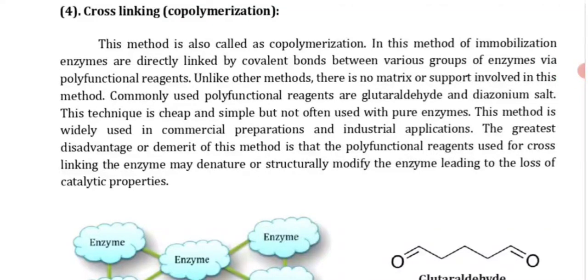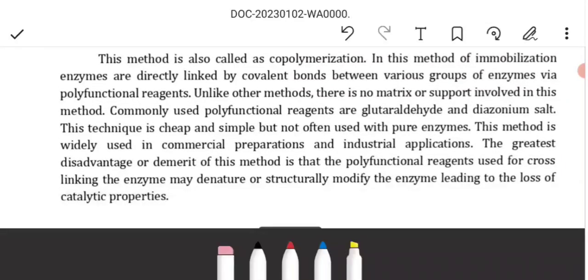This method is also known as co-polymerization. In this method, immobilized enzymes are directly linked by covalent bonds. Covalent bond between groups of enzymes via a polyfunctional reagent. There is no matrix or surface. The polyfunctional reagents are glutaraldehyde or diazonium salt.